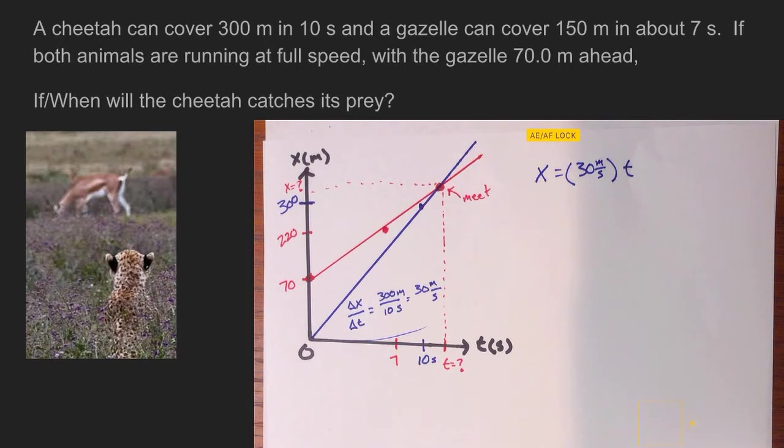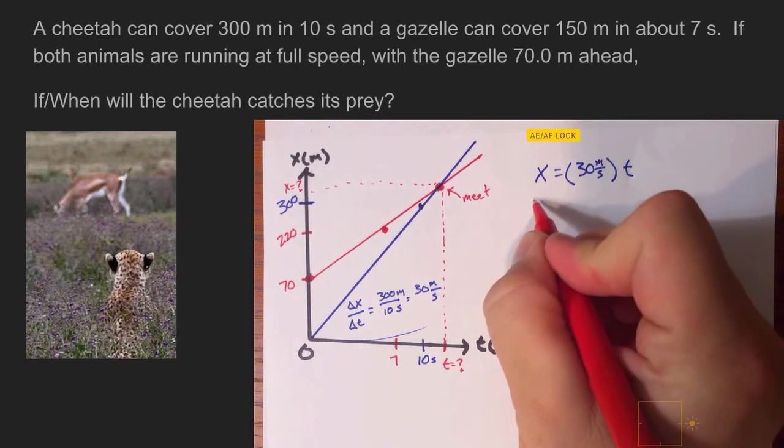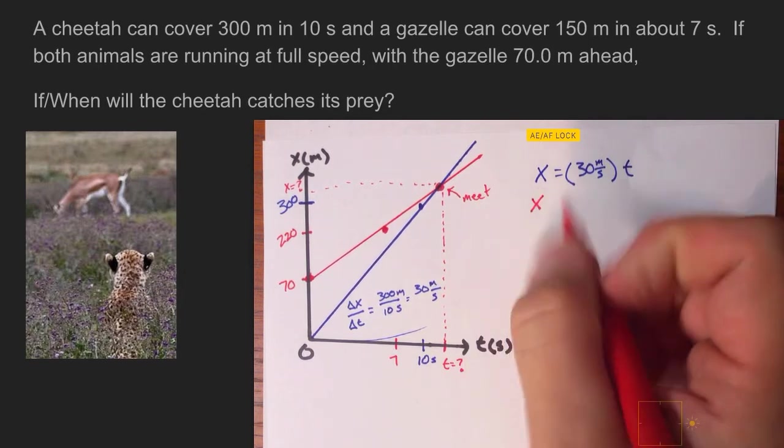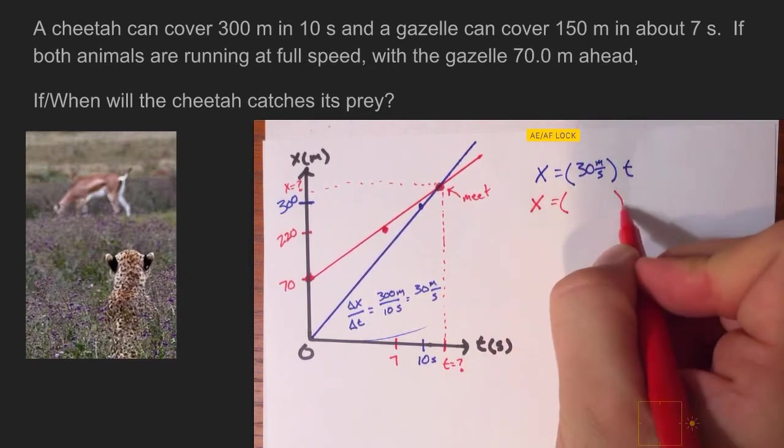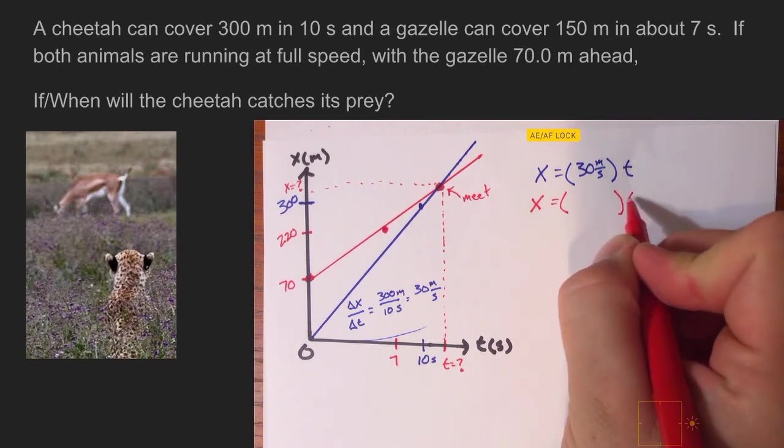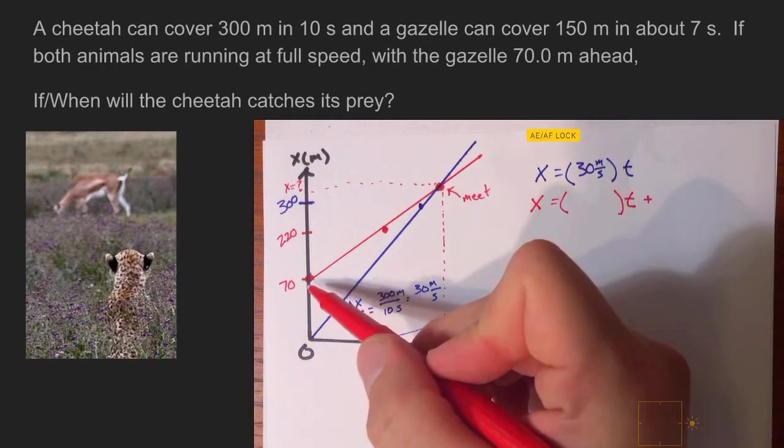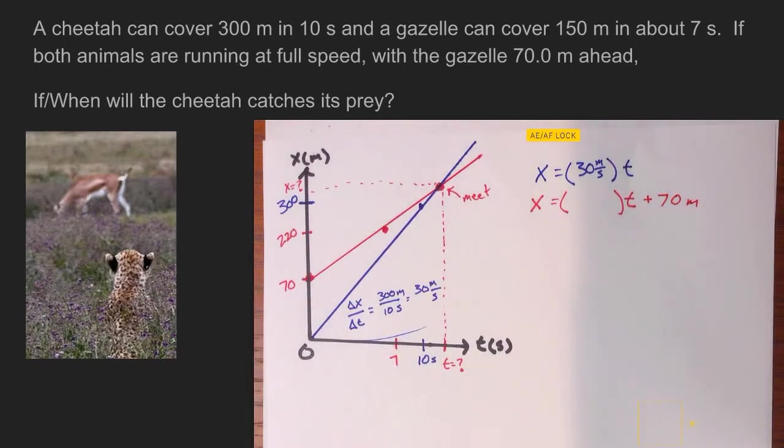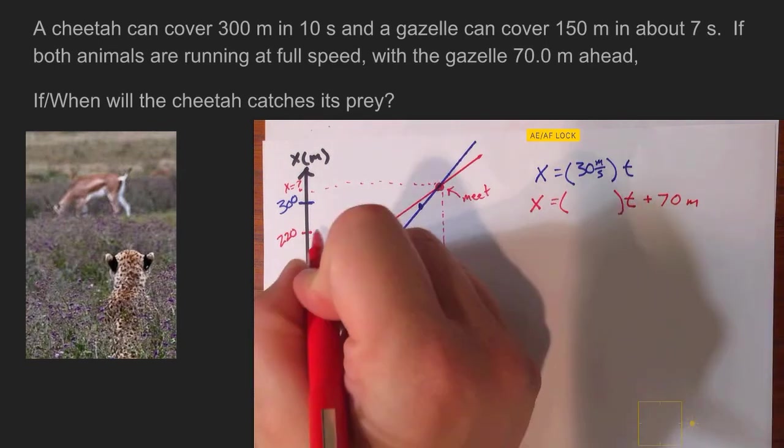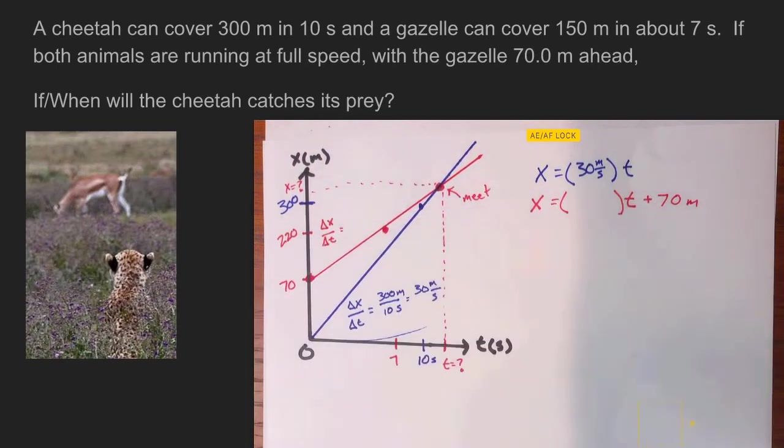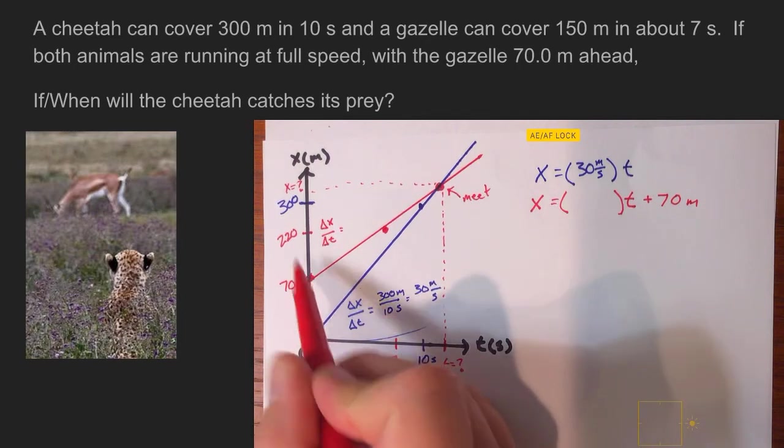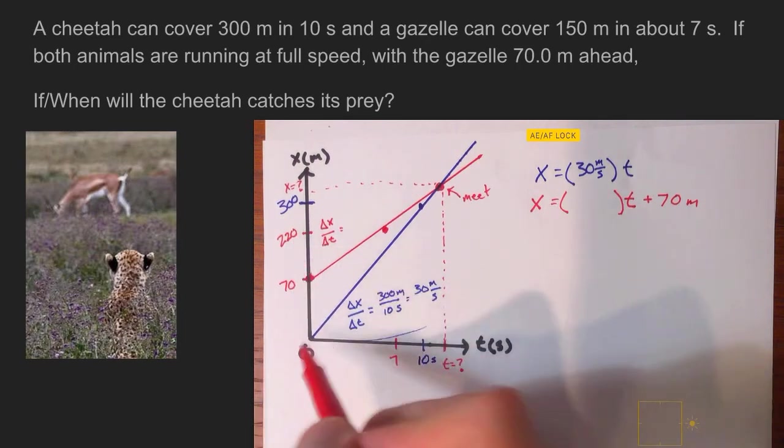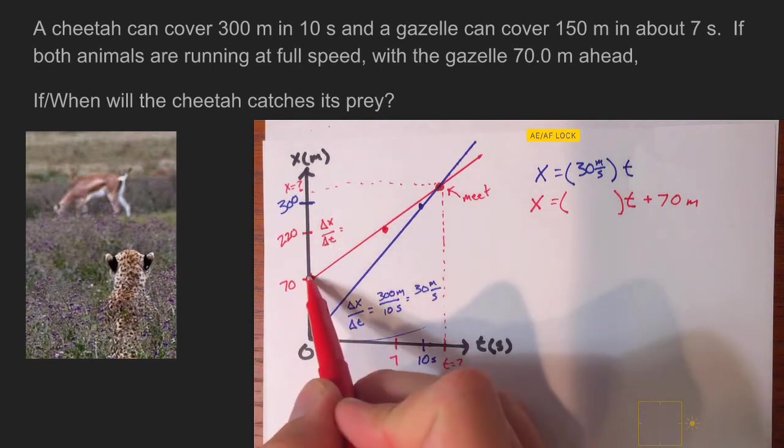Let's take a look now at what the equation would be for the gazelle. So I'm switching over to red. Same deal. The position is going to be equal to the slope for the gazelle, multiplied by time plus the y-intercept or the starting position. So if you take a look here, the gazelle actually starts at 70, so that's important. We need to leave that on there. So how do we go ahead and figure out the slope for the gazelle's line? I'm going to use a little bit of a shortcut. We know that he changes his position from here to there. That's 150 meters. So his displacement is 150 meters.